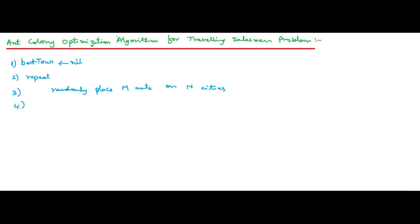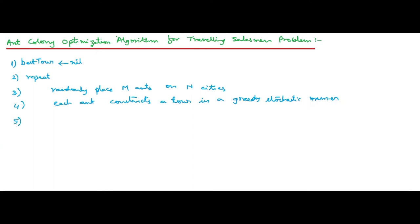The fourth step is: each ant constructs a tour in a greedy stochastic manner. The fifth step is: each ant deposits pheromone only on its tour edges.